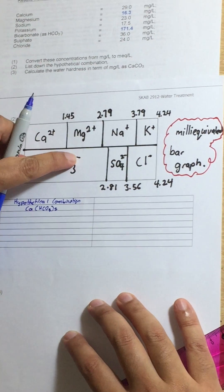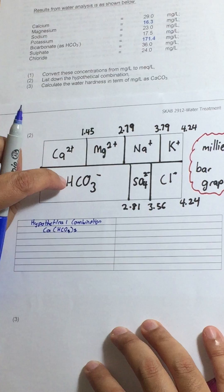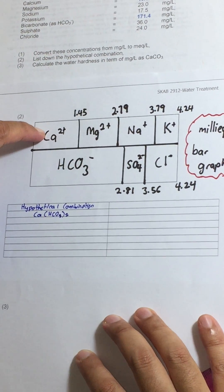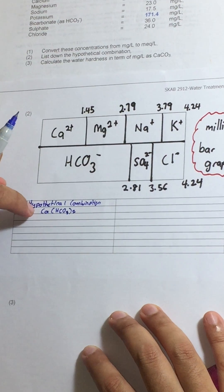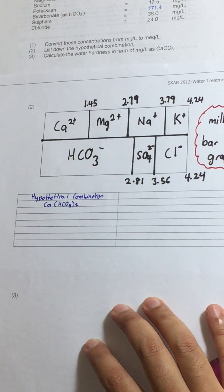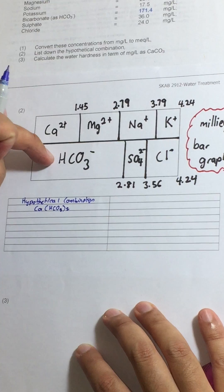Since bicarbonate has minus 1 and calcium has 2 positive, that means we need to have 2 bicarbonate in order to neutralize calcium. And that's why we write it as Ca bicarbonate 2. That is the first thing that we have.